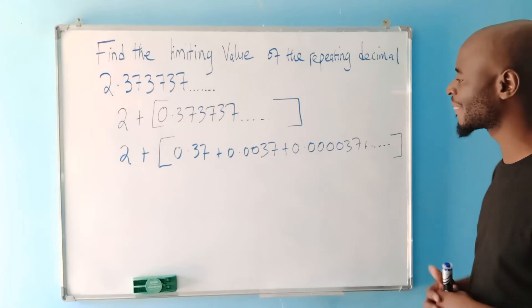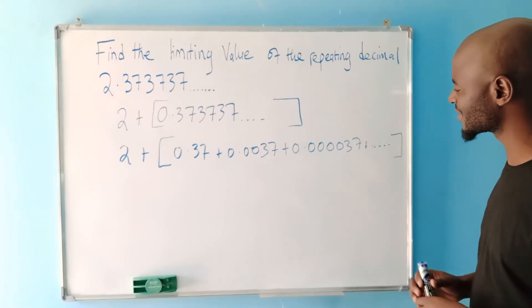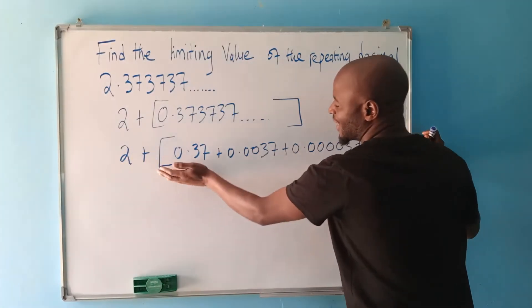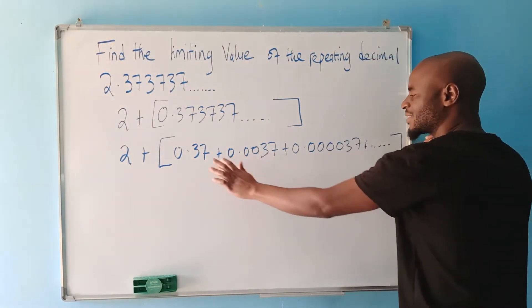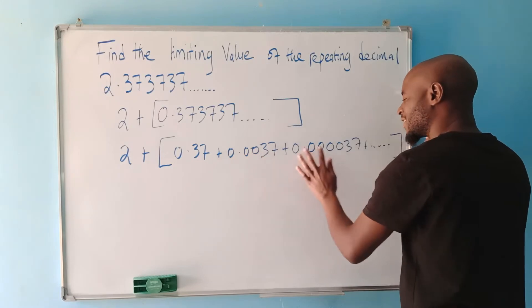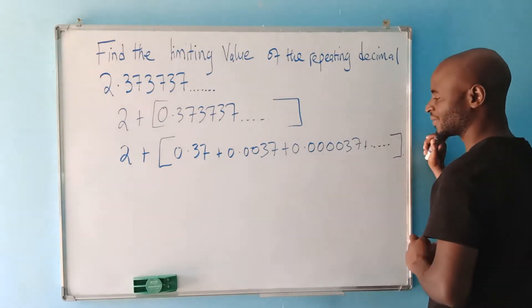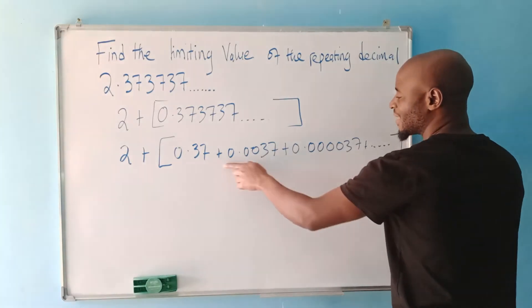So we want to find what do we end up with as this kind of repetition continues. What will be the limiting value? So when you look at this, 2 wasn't repeating. That's why I've isolated 2 there and remained with what is repeating. Now when we look at these terms that are repeating here, you can see that the series here is a GP. You can see that what we are ending up is a GP.